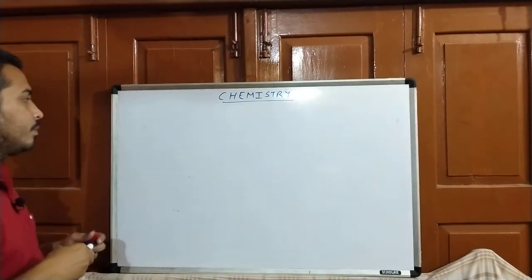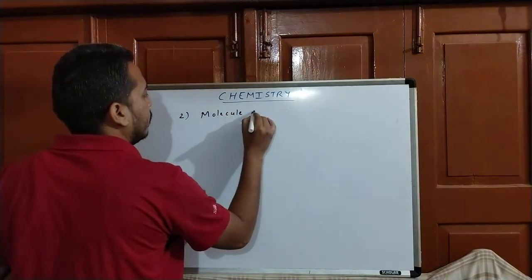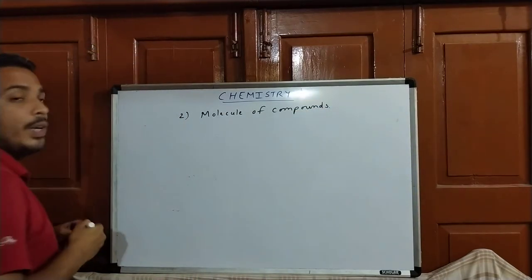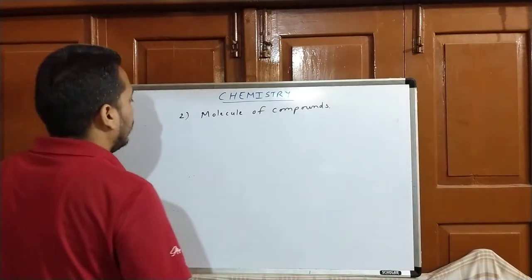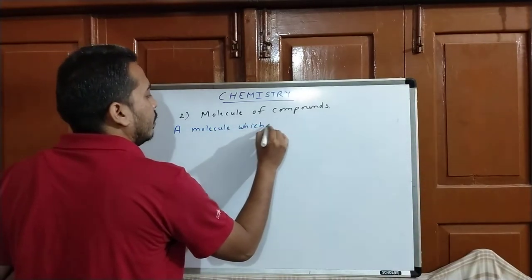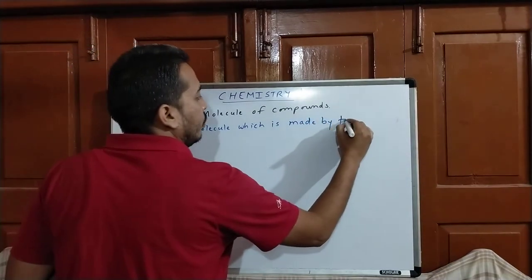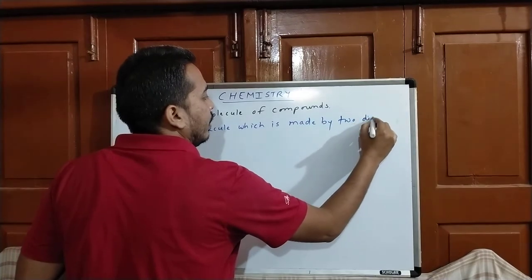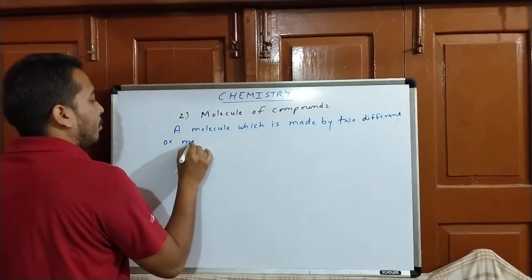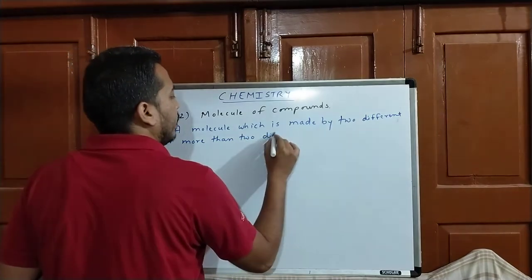Next is molecule of compounds. Molecule of compounds means a molecule which is made by two different or more than two different elements.